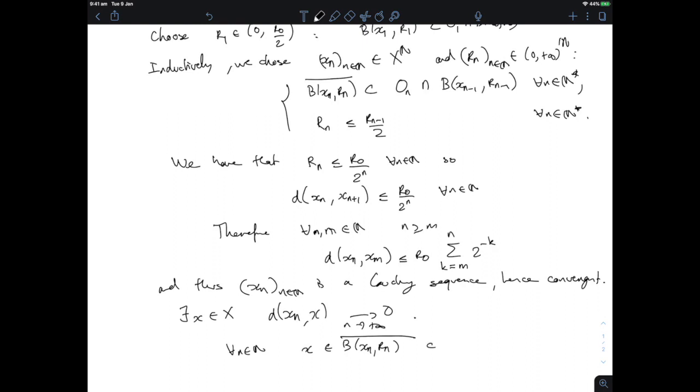And this is included in Oₙ intersected with the previous ball, and so on and so forth, intersected with B(x₀, r₀), and that is true for all n. So x is inside the intersection of all the Oₙ's and also inside this ball which was inside Ω. So this is a point inside G intersected Ω, so G intersected Ω is non-empty, which concludes the proof of Baire's theorem.